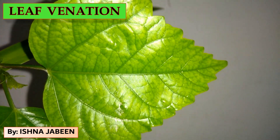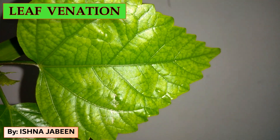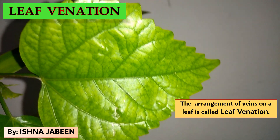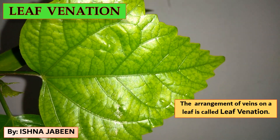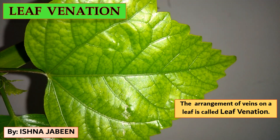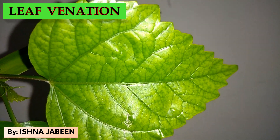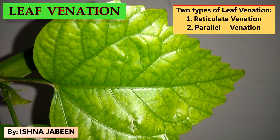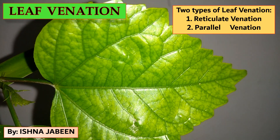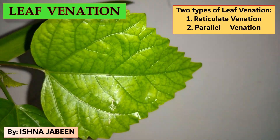Now, leaf venation: the arrangement of veins on a leaf is called venation. We have two types — reticulate venation and parallel venation.